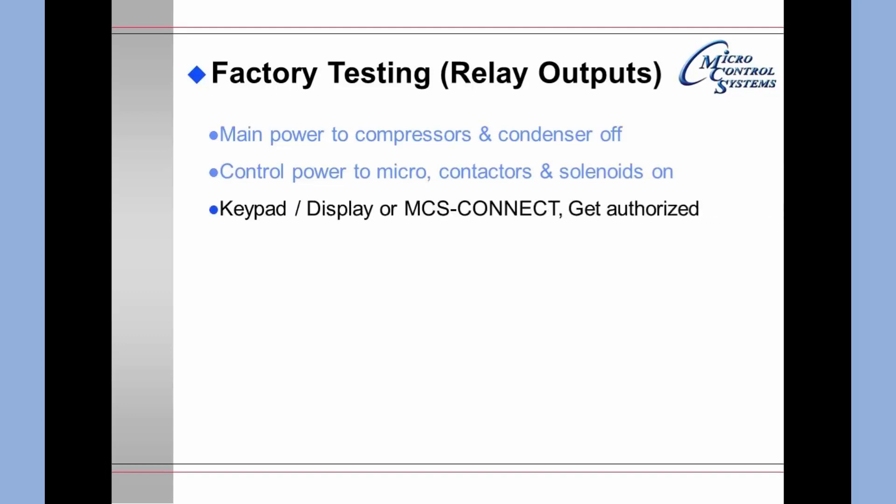On the keypad or display or using MCS Connect, you need to get authorized. Put each relay output in manual on and verify that the correct contactor or relay or solenoid has pulled in. Do not skip any step. You must verify that if you're on a screw compressor and you turn on a load solenoid, it is the load solenoid that came on. If you are on reciprocating compressors, you have to verify that the right unloader has come on, etc. Then put each output back in auto.